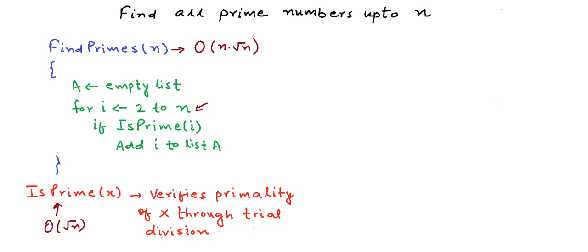Because this loop runs almost n times, this gives us O(n√n). So this was one way of finding all the prime numbers using trial division.